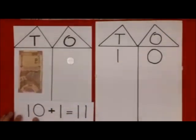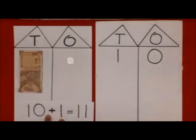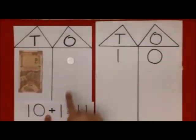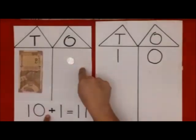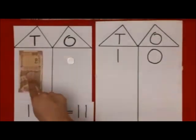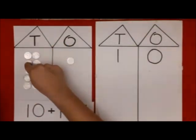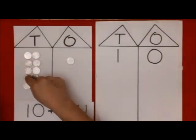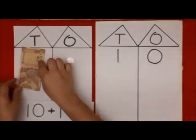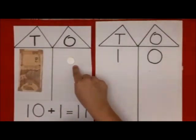1 ten and 1 extra. There is 1 in 1's house. How much did he go? He goes to 10. 1, 2, 3, 4, 5, 6, 7, 8, 9, 10 — and 1 more. 11! Easy peasy.